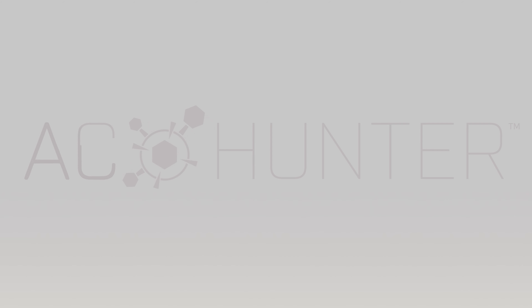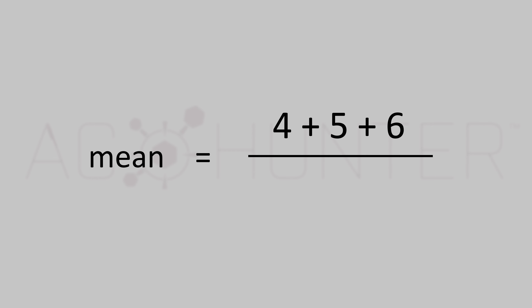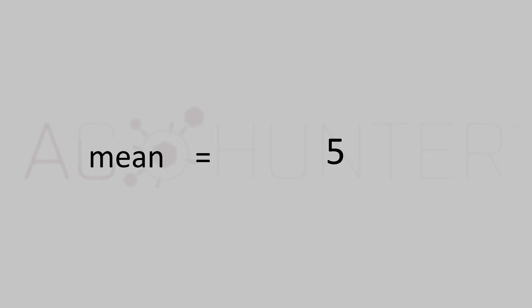Let's start with something we already know: the mean. The mean is simply another term for average — calculated by summing a series of numbers and then dividing by the count of values. So if we have the numbers four, five, and six, our sum is fifteen, and since there are three numbers in total, we calculate the mean by dividing fifteen by three, giving us five.